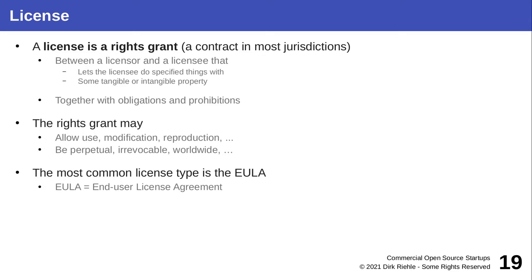A license could be perpetual, irrevocable, worldwide — or just for a specific region. As students, the most common form of license you've dealt with, perhaps without noticing, is the EULA — the End User License Agreement. If you buy something that clearly has software in it, you're not buying the software, you're buying a usage right. As you do so you have to agree to the license — it's implied in you opening the package, the so-called shrink-wrap license. Because of the large number of consumer products, these are not individual contracts — you just open the package and supposedly you agree to the license.